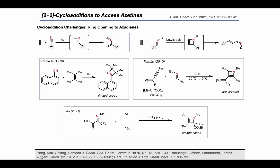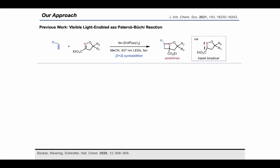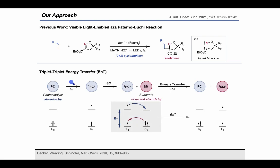When we considered how we might access these desirable structures through 2+2 cycloaddition, we were inspired by our previous work on the aza-Paternò-Büchi reaction, which uses visible light and an iridium catalyst to form the product in exceptionally mild conditions, which we thought might be suitable for isolating these azetine products which can be sensitive to further decomposition. I will also add here that if you are interested in learning more about this previous work, I invite you to watch Synthesis Workshop episode 35 where my co-worker Mark Becker talks about this reaction in detail. In this previous method, the triplet excited state of the isoxazoline starting material is accessed through triplet energy transfer from the photocatalyst.